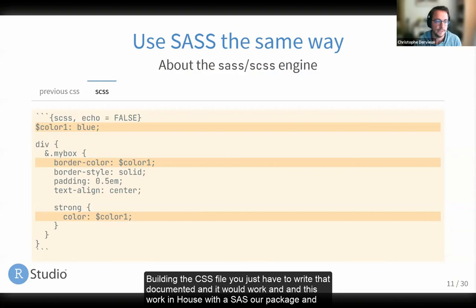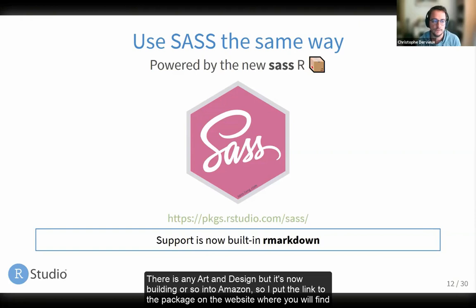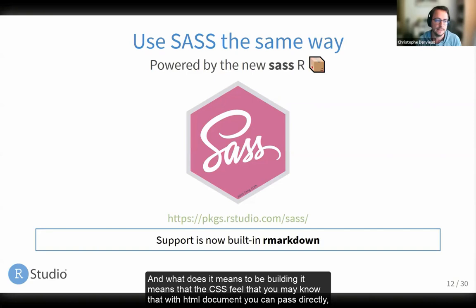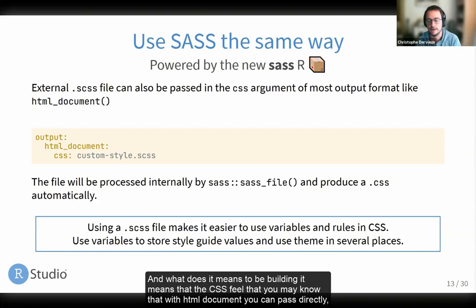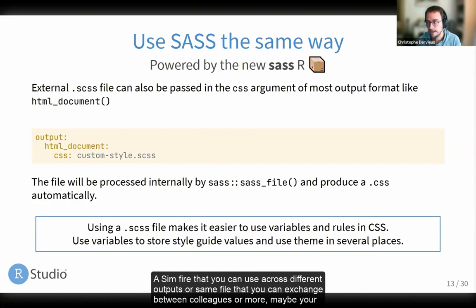Writing that into a chunk will apply the style for you. You don't have to know anything about compiling a CSS document. This works in R through the Sass R package, and the support is now built into R Markdown. The CSS field that you may know in HTML documents — you can pass directly a CSS file or a Sass file, and R Markdown using the Sass package will do everything for you. This could be a great way to have a Sass file you can use across different outputs, exchange between colleagues, or use if your organization already has Sass files.